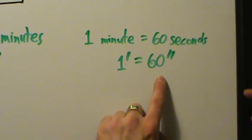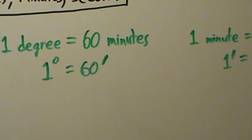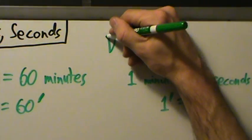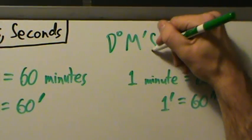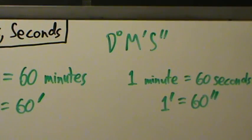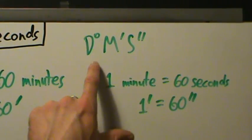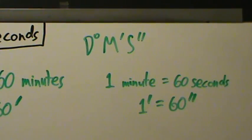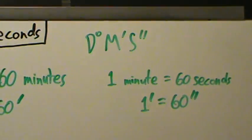So one minute is 60 seconds. If you have a number in degree-minutes-seconds format — DMS format — you can express a degree value as a degree decimal or a DMS format number. We'll talk about converting back and forth between decimals, which are just plain degree numbers, and DMS format.